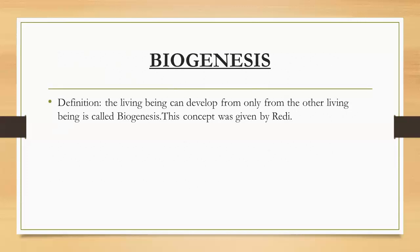Biogenesis describes the origin of life on earth — life is due to pre-existing living organisms. These first living organisms have the ability to generate other living beings, as shown in practical experiments. Redi and Pasteur performed experiments proving that the process of biogenesis is correct. It describes reproduction as an essential ability of living organisms.